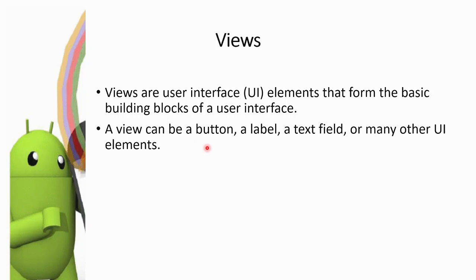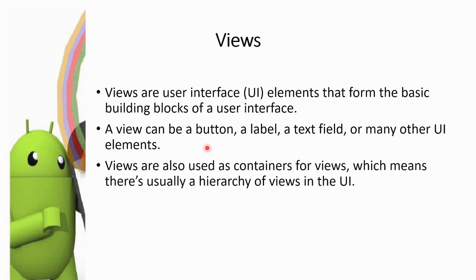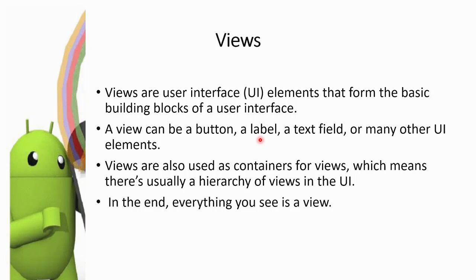There are many UI elements: lists, checkboxes, radio buttons, text, paragraphs, and columns — everything is a view element. Views are also used as containers for other views, which means there is usually a hierarchy of views in the UI. In the end, everything you see is a view.